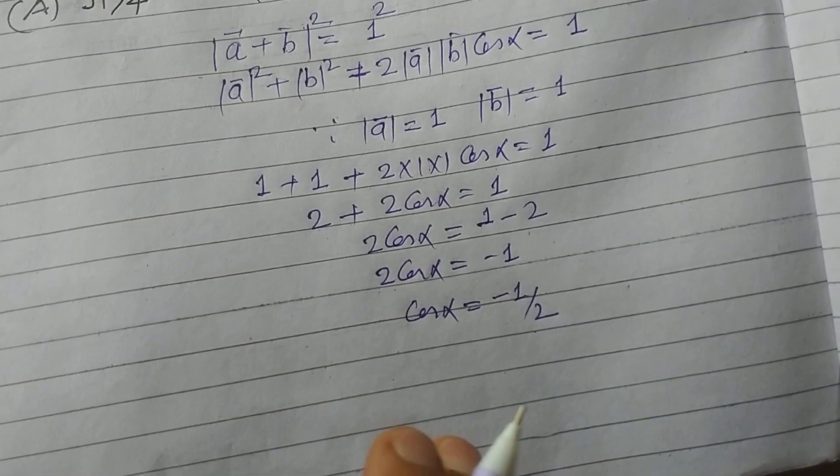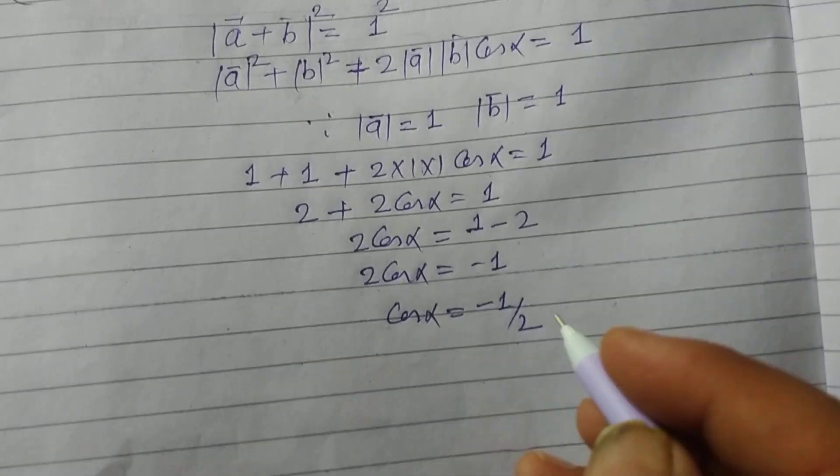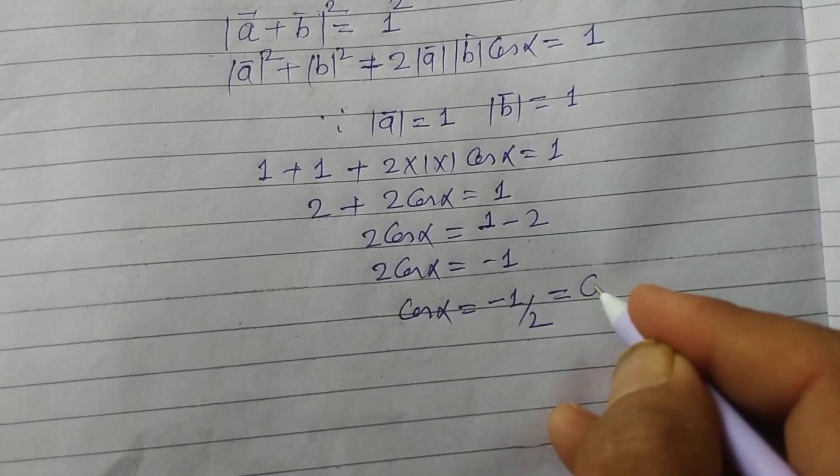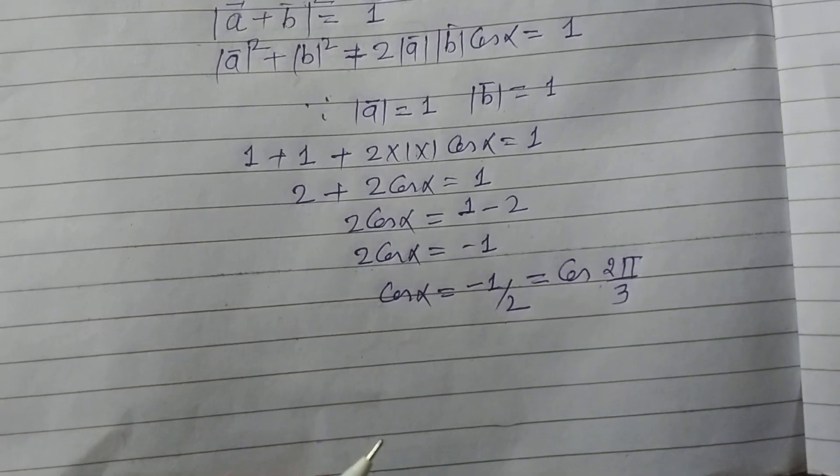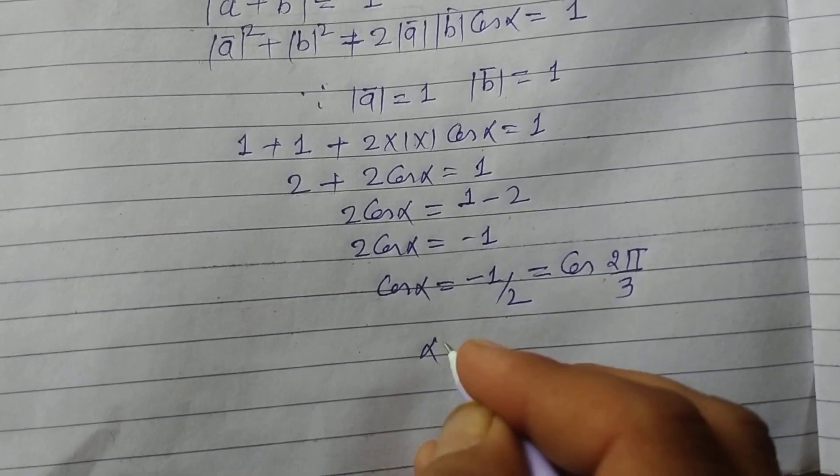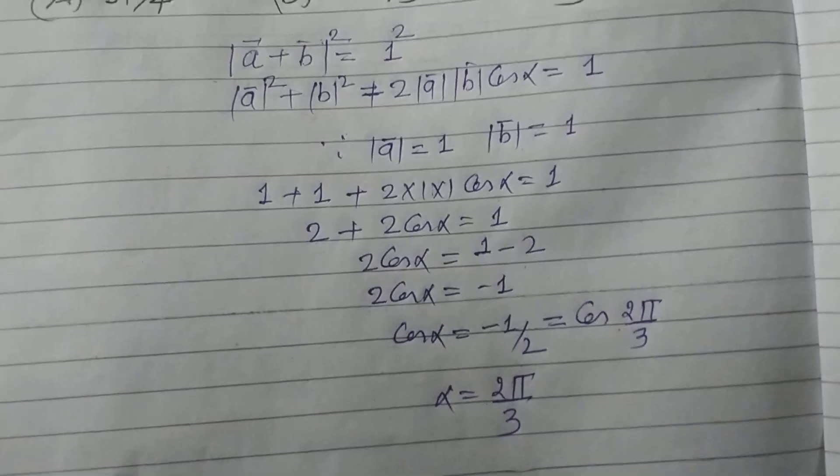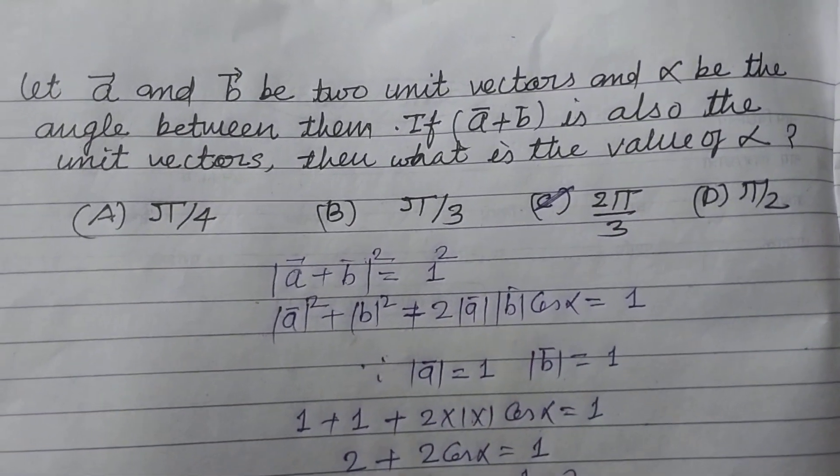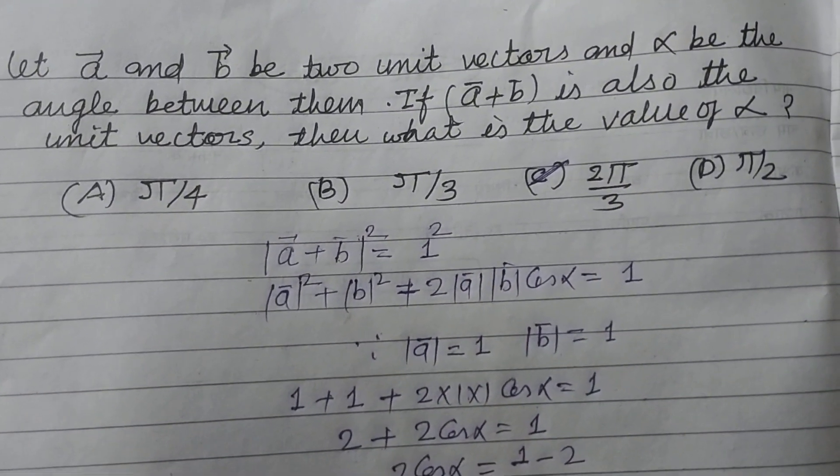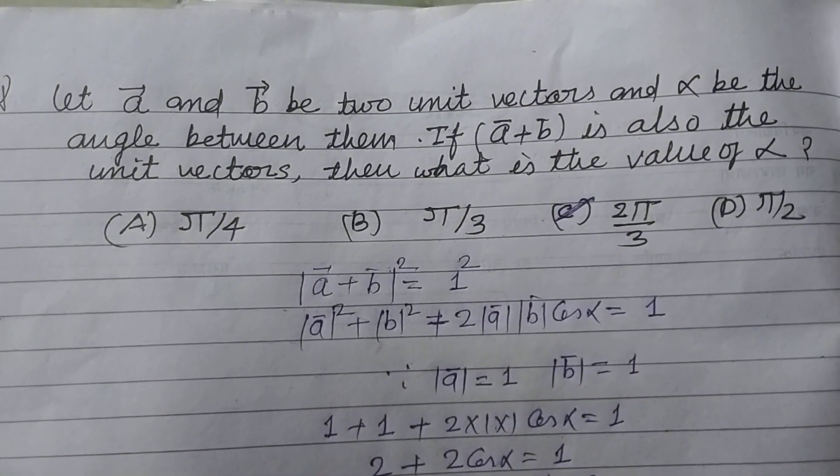And this is the value of cos 2 pi by 3. So alpha equals 2 pi by 3, which is found in option C. So answer C is correct in this question.